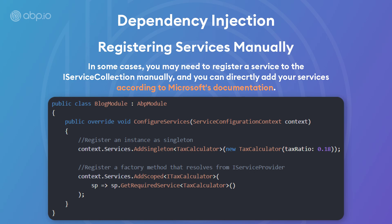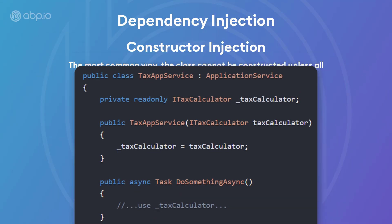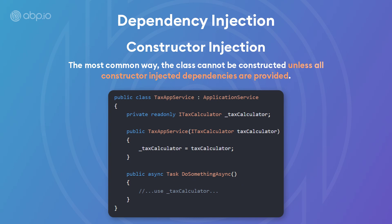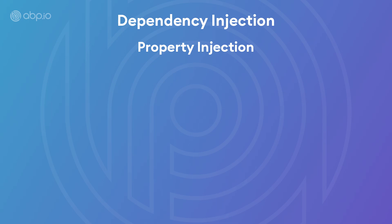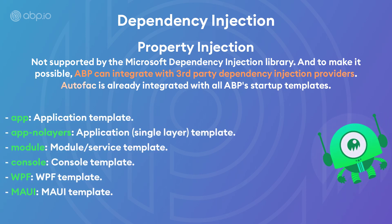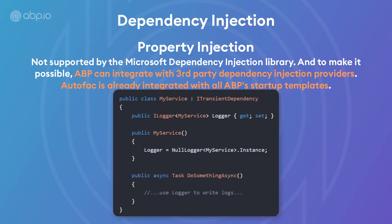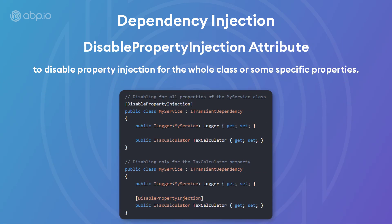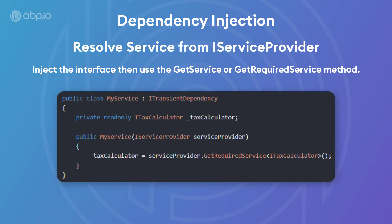Now that we've registered our services, how do we inject them? The most common way is constructor injection, where the class clearly cannot be constructed unless all constructor-injected dependencies are provided. There is also property injection, which is not supported by the Microsoft dependency injection library. To make that possible, ABP can integrate with third-party dependency injection providers, and Autofac is already integrated with all the ABP startup templates. For property injection dependencies, make sure you declare a public property with a public setter. You can also resolve a service directly from the iServiceProvider — just inject the interface and use the GetService or GetRequiredService method.